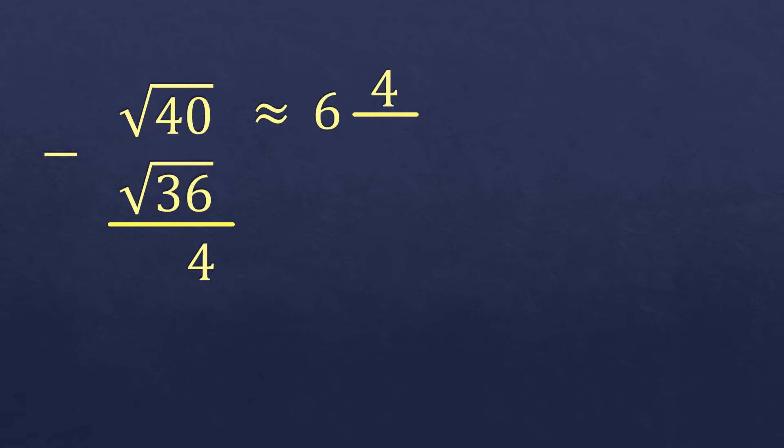For the denominator, we are going to double the whole number 6. So we're going to double it, 6 times 2, that will be 12. So square root of 40 is approximately equal to, or estimated to be, 6 and 4 twelfths.